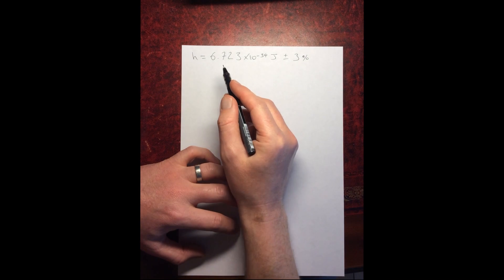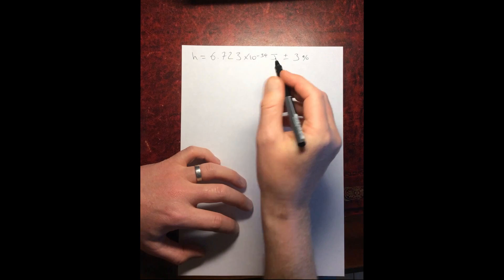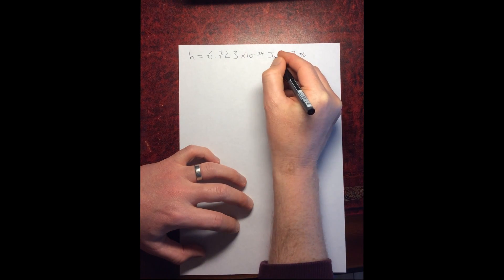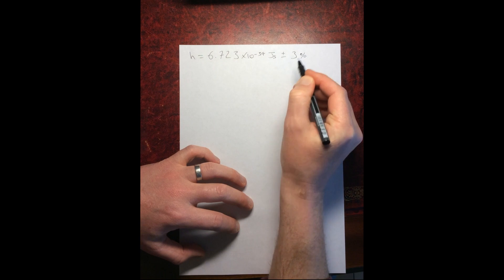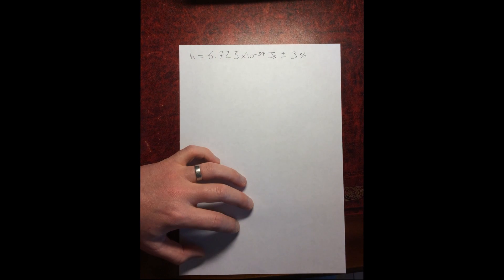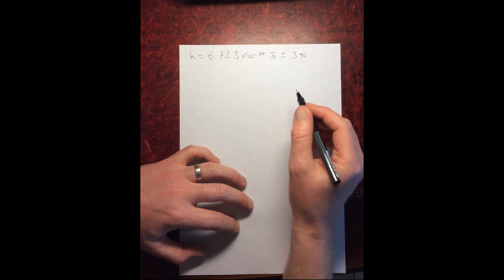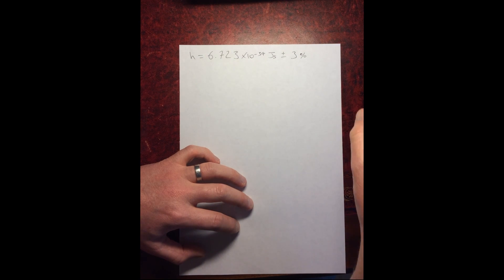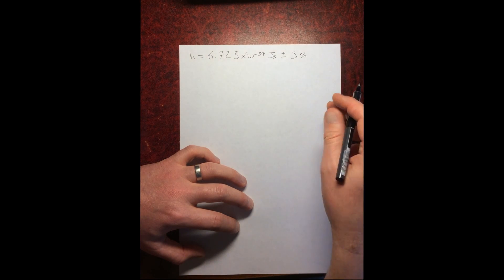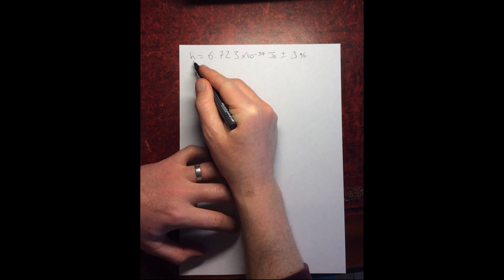We've calculated a value for Planck's constant and it's 6.723 times 10 to the minus 34 joule seconds, plus or minus 3%. So we've taken some data, plotted a graph, worked out Planck's constant, and gone through the process of calculating the percentage uncertainties in all of our data and added those up to get the final percentage uncertainty in our Planck's constant.